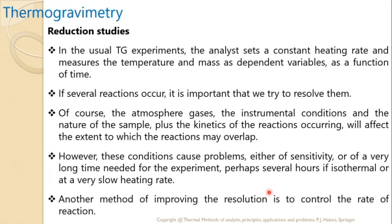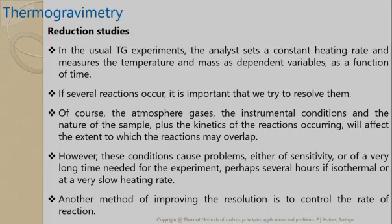In a usual TG experiment, the analyst sets a constant heating rate and measures temperature and mass as a function of time. If several reactions occur, it is important to try to resolve them. The atmospheric gases, instrumental conditions, and the nature of the sample — plus the kinetics of the reactions — will affect the extent to which reactions may overlap. However, these conditions cause problems of sensitivity or of a very long time needed for the experiment, perhaps several hours if isothermal or at a very slow heating rate. Another method of improving resolution is to control the rate of the reaction.